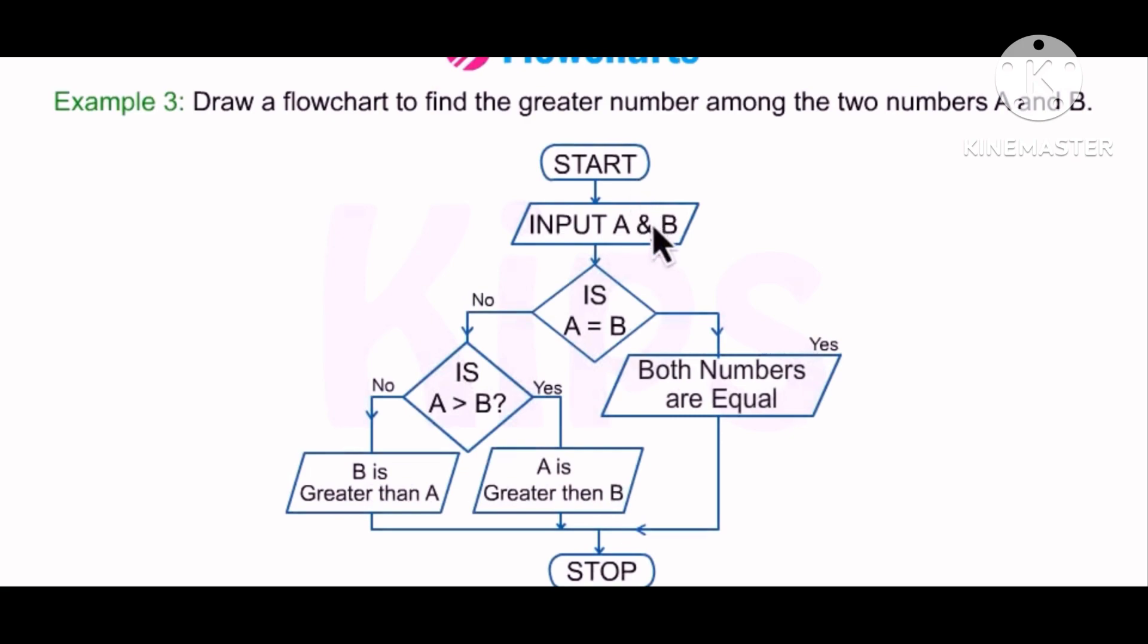Example 3: Draw a flowchart to find the greater number among the two numbers A and B. Start. Input A and B. Is A equals to B? If yes, then both numbers are equal. Stop. If no, then... Is A greater than B? If yes, then A is greater than B. If no, then B is greater than A.